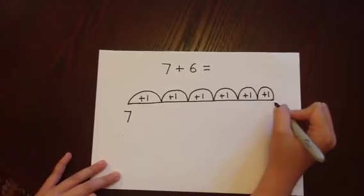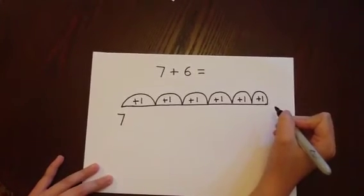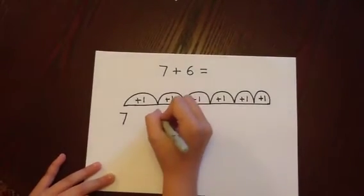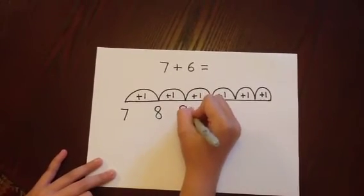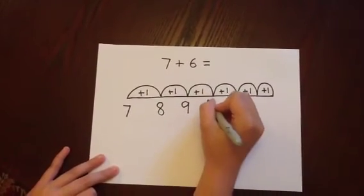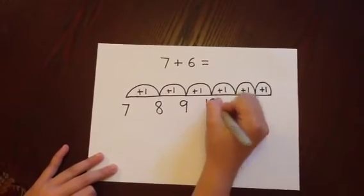Next, we add on one to the number we started with. Seven add one is eight. Eight add one is nine.